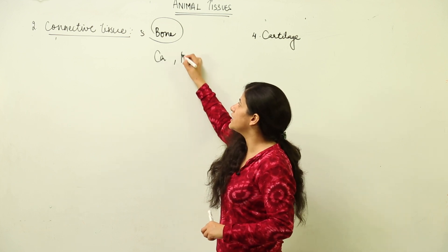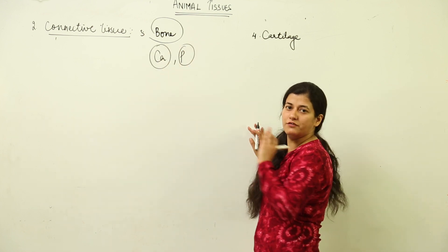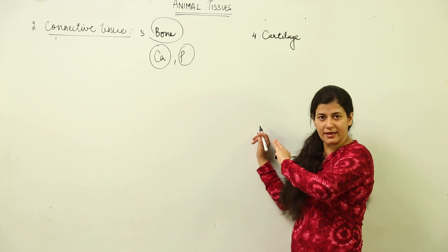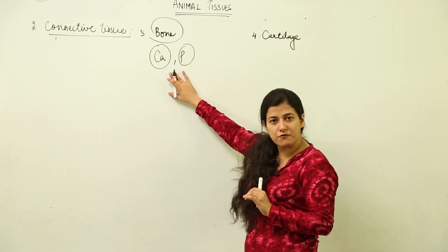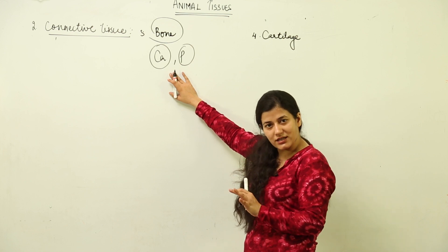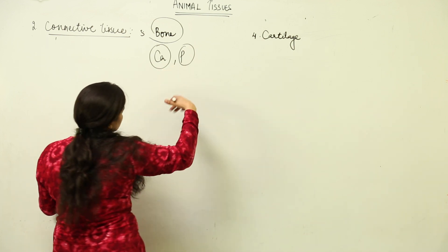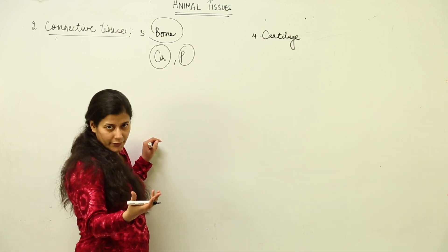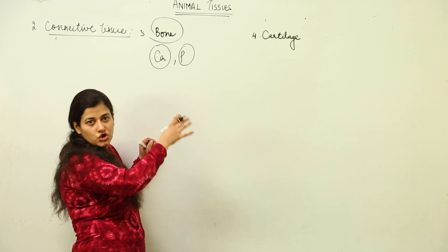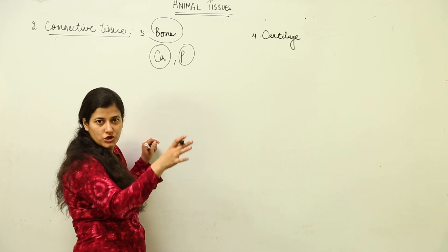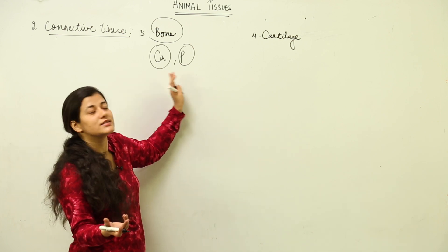Bone is also a connective tissue. The intercellular matrix of bone is rich in calcium and phosphorus — these two elements are very important for living organisms. The cellular component of bone is known as osteocytes — the cells responsible for the formation of bone.